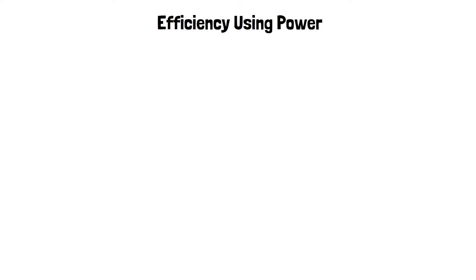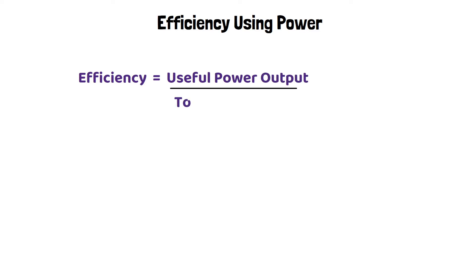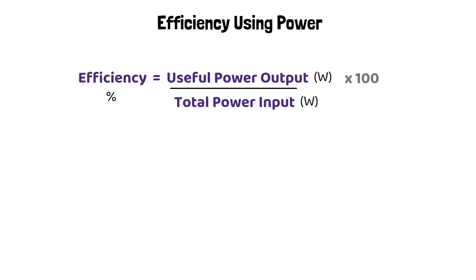You can also calculate efficiency using the power rating of a device instead of energy. The equation becomes: efficiency equals useful power output over total power input, where values are given in watts. It's really important to remember that you can't mix and match power and energy values. If you want a percentage, multiply by 100.